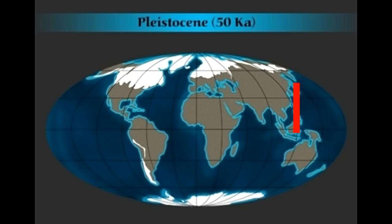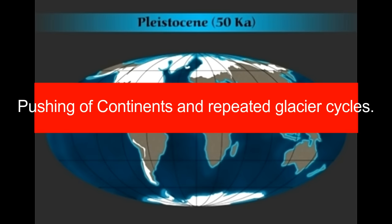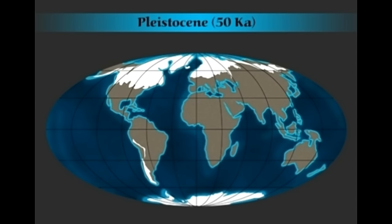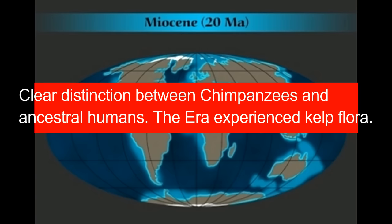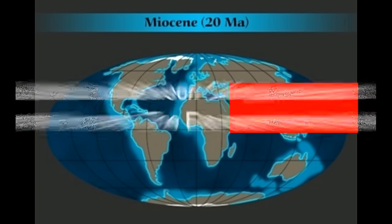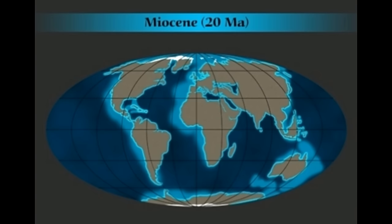After the K-T boundary mass extinction, the geology of our planet changed considerably as the supercontinent called Pangaea split into separate individual continental land masses. These land portions started drifting and became the present-day continents. The Australian portion had already split apart in the early Cretaceous period and shifted towards the north, merging with the Southeast Asian regions. The tectonic plate of Antarctica moved towards the current South Polar region.